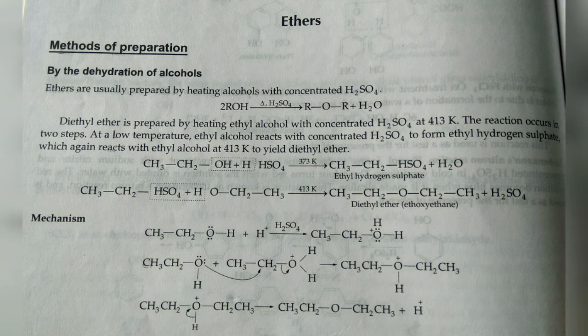This is an SN2 mechanism. The reaction is: 2 R-OH + concentrated H₂SO₄ → R-O-R, that is the ether. Diethyl ether is also prepared by heating with concentrated sulfuric acid at 413 Kelvin. In the first step, alcohol O-H is lost and sulfuric acid H is lost, resulting in ethyl hydrogen sulfate. Ethyl hydrogen sulfate with another mole of the alcohol loses H₂SO₄ and results in diethyl ether.